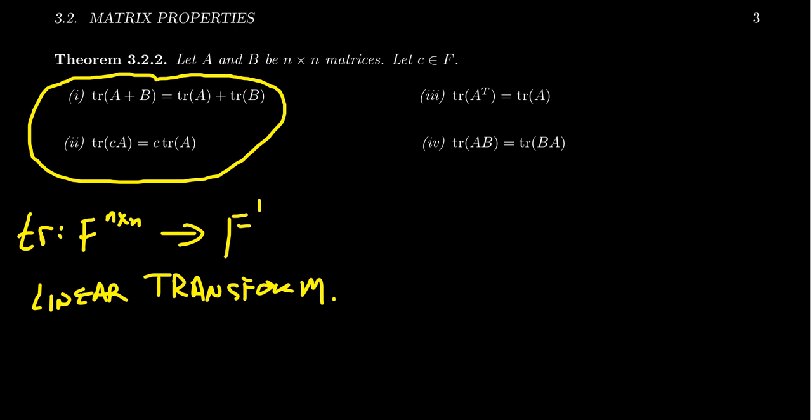I should mention that for the transpose map, similar statements hold for the conjugate transpose of complex matrices. Property three: the trace of A^T equals the trace of A, because transposition doesn't change the main diagonal — it switches rows to columns and columns to rows, but the diagonal entries remain identical. So transposition doesn't do anything to the trace.